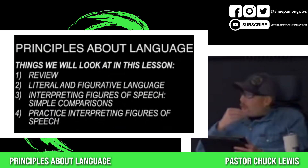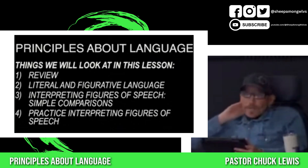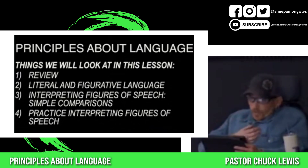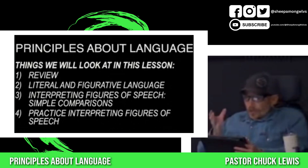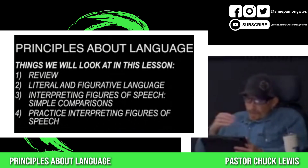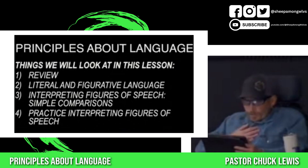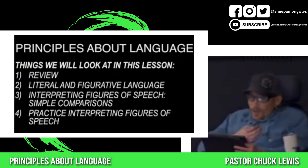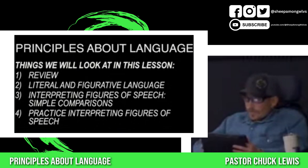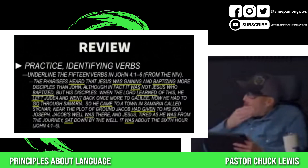Last time we finished looking at word meanings and relationships. We had about two weeks of English class — we looked at verbs, adjectives, adverbs, and conjunctions. We also looked at how to analyze word relationships. Today we're going to start looking at principles about language. But before we get into that, I want to review our homework from last time, which was practicing word meanings and relationships.